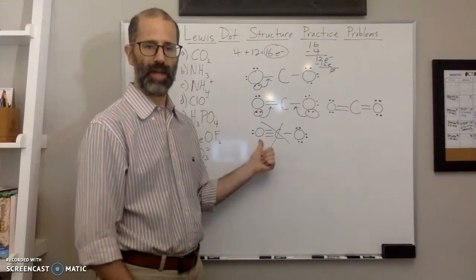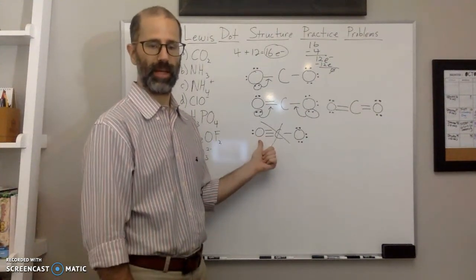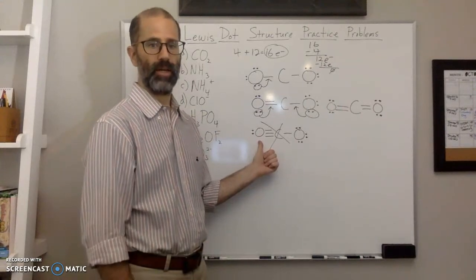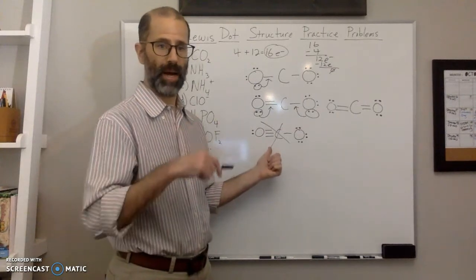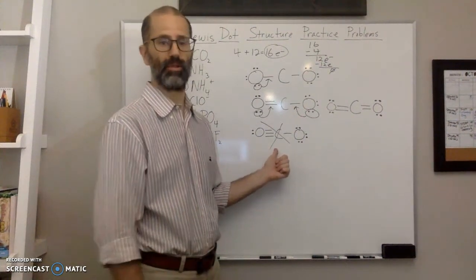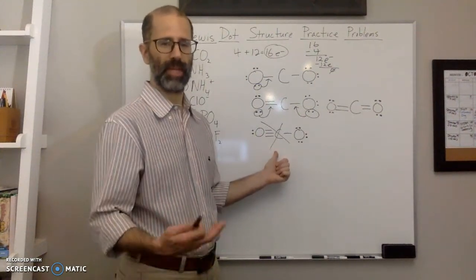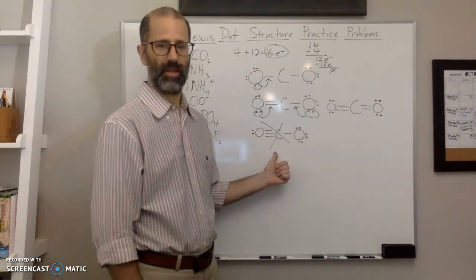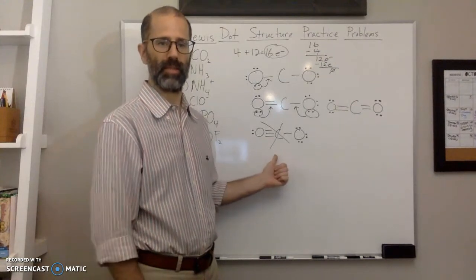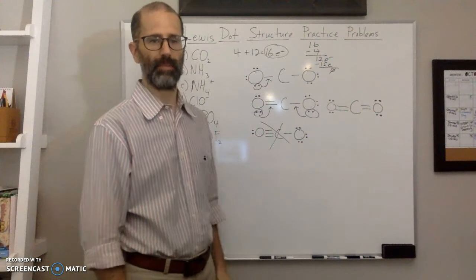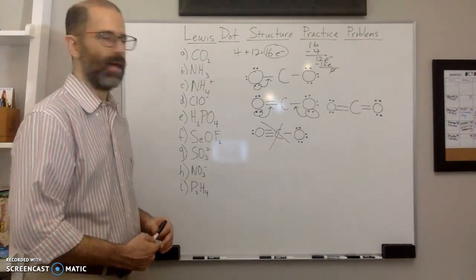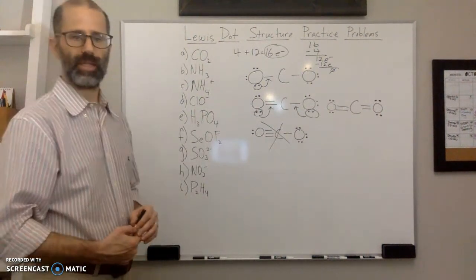Other bonding patterns: hydrogen only bonds once; halogens typically have only one bond; nitrogen loves to have three bonds and one lone pair. Normally when you see nitrogen in a molecule it's going to have three bonds and one lone pair — if it doesn't, it's probably not the best Lewis dot structure, though it might still be legitimate. We'll go over plenty of examples in the videos in this class. That's example number one.